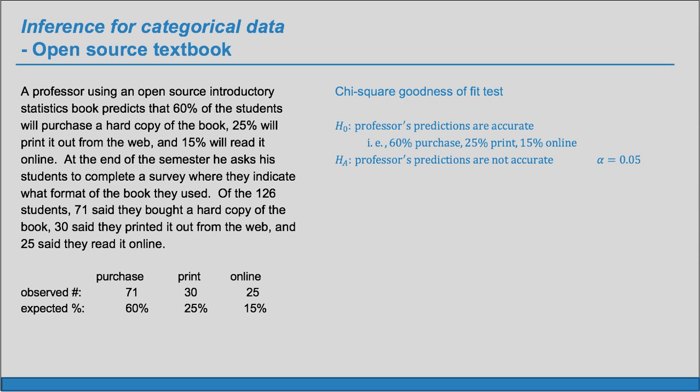Here we have a table that has the observed number, so 71 purchased it, 30 printed it, and 25 read it online. And based on our null hypothesis, we have the expected percent that would purchase, print, and online. So those are given by our null hypothesis. Those are the professor's predictions.